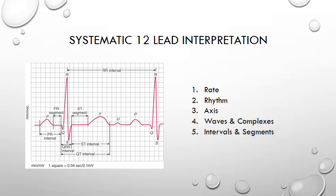Here I will give an example of a systematic approach, but this is not the only approach you must use. Many cardiologists and ECG gurus have their own methods. The important thing is that you have one and that the one you use works for you. For me, five simple steps are how I approach the ECG printouts: look at the rate, the rhythm, axis, the waves and complexes, and how the numbers relate to them in the intervals and segments.